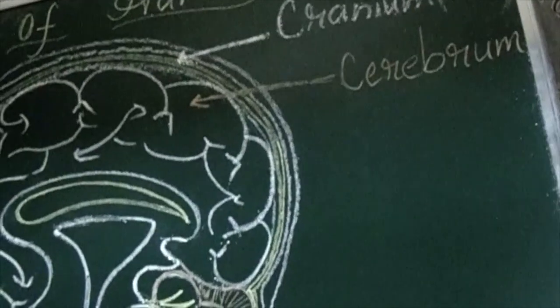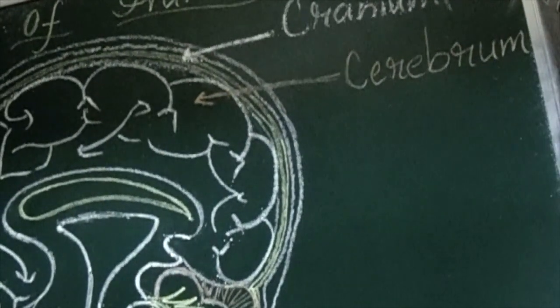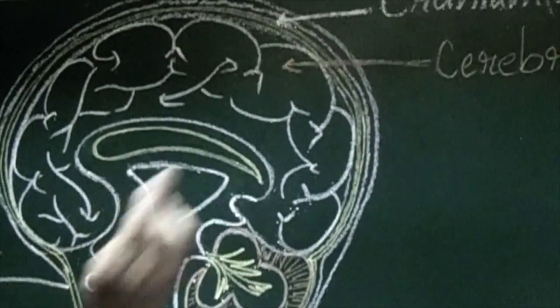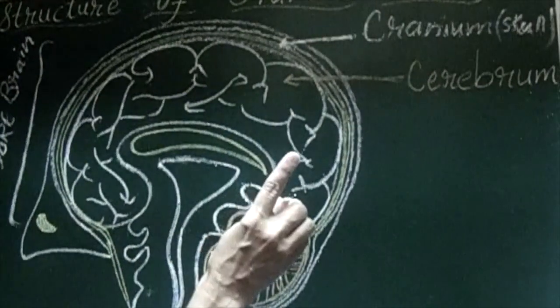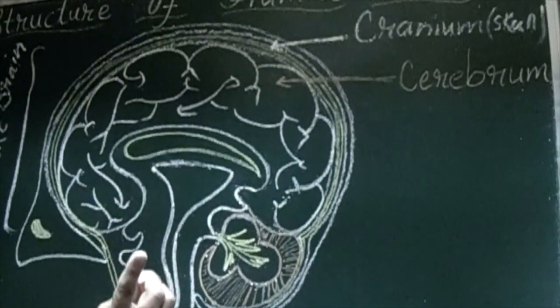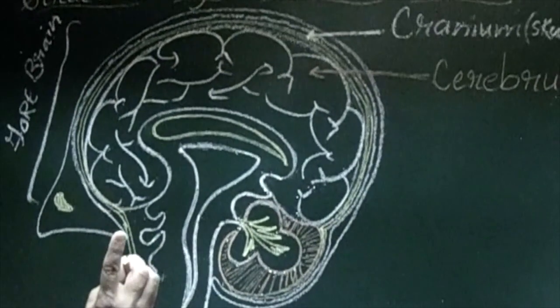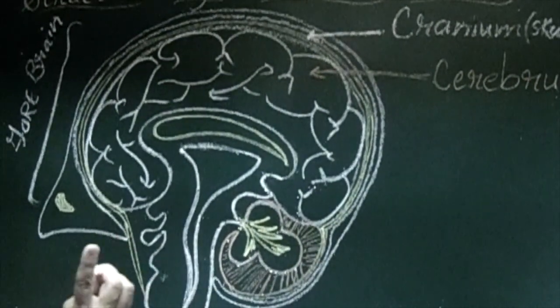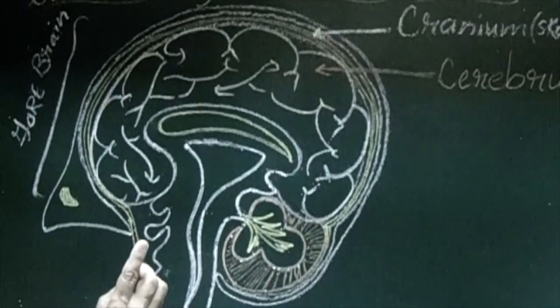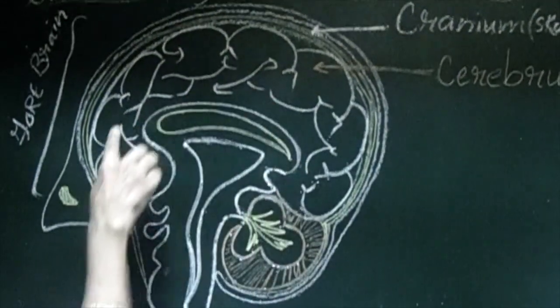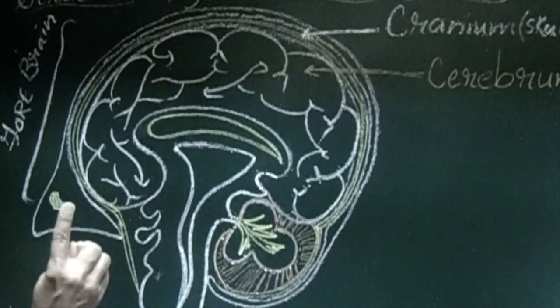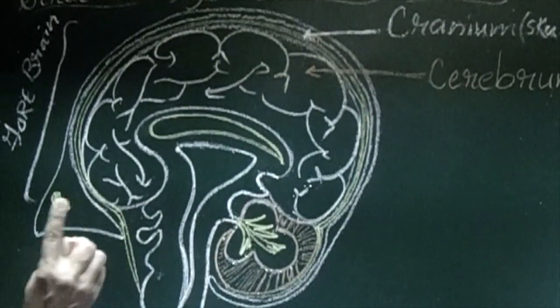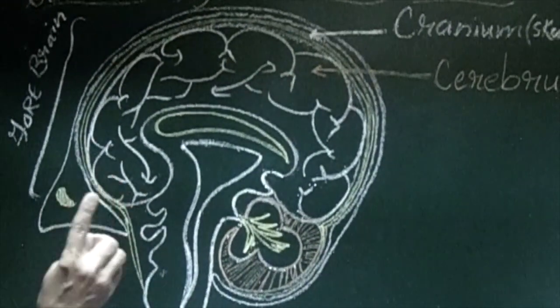This is about forebrain. Let us try to understand the function of forebrain cerebrum. Cerebrum, what is the function of cerebrum? It is the seat of consciousness, intelligence, imagination, reasoning, emotions and will power. It is the center of all the mental activities.